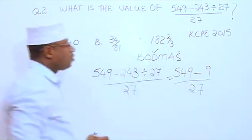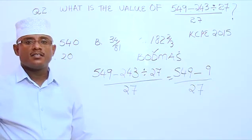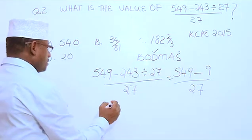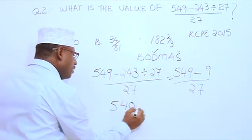We have 549 minus 9 is 540. We have 540 over 27.